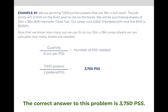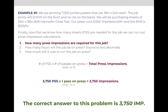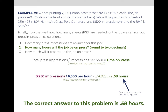Now that we know how many press sheets, we can calculate the cost for the time on press using those three formulas. The first is number of impressions. We have 3,750 sheets. This job prints 4 over 0 — it only prints on one side, so it only has one pass on press. So the number of sheets and the number of impressions are the same: 3,750. Then we can take the number of impressions and divide it by the speed on press: 3,750 impressions divided by 6,500 impressions per hour means this job will be on press for 0.576923, or rounded, 0.58 hours.